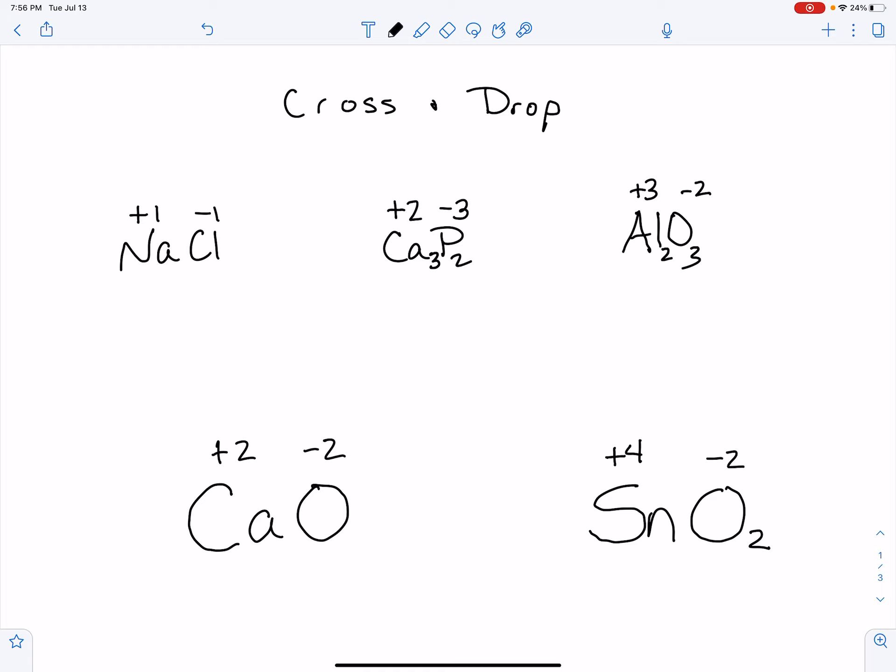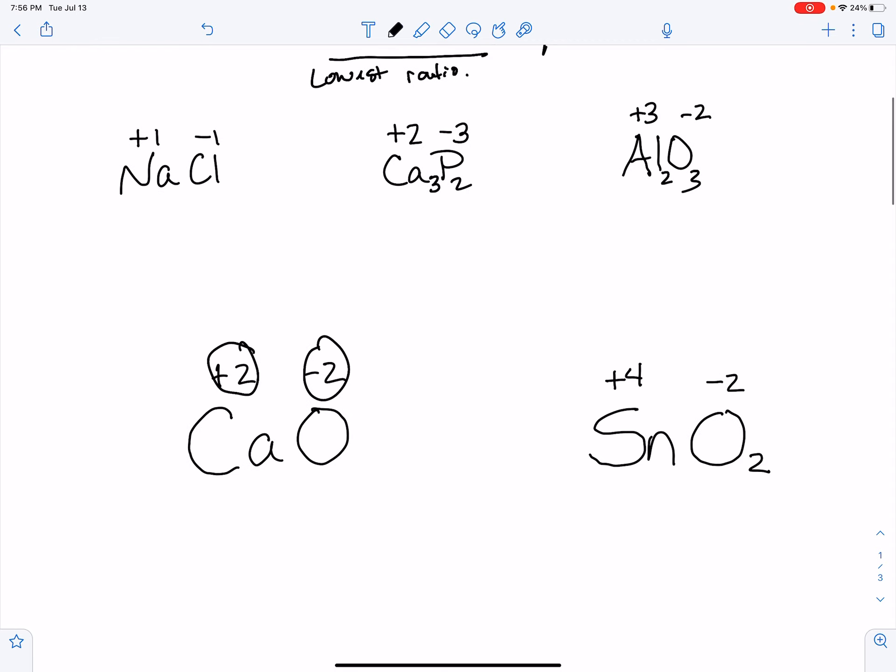When you're doing these, it has to be—for the cross and drop to work—it has to be the lowest ratio. And it's not going to work if it's not the lowest ratio. So if you look in this situation, I don't have the lowest ratio. So I would not say Ca2O2. You can't do that. It's got to be the lowest ratio of the charges.